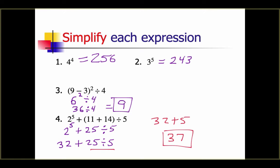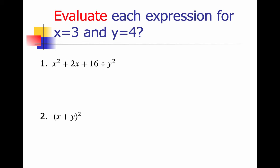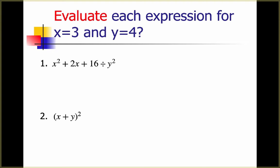When you're doing these simplifications, especially with problems like numbers 3 and 4, you need to show all your steps — show everything you're doing one piece at a time. Next we'll evaluate expressions with variables by plugging in given numbers. We have x squared plus 2x plus 16 divided by y squared. We'll put in 3 for all our x's and 4 for all our y's, giving us 3 squared plus 2 times 3 plus 16 divided by 4 squared. You need to show that you're substituting.